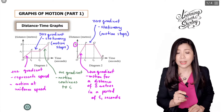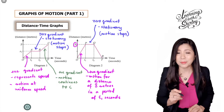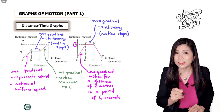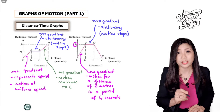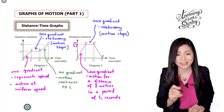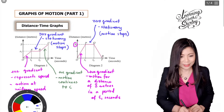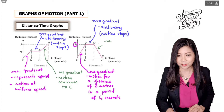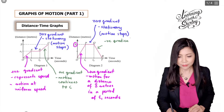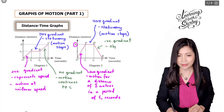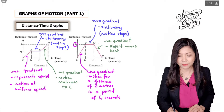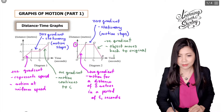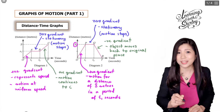Now let's look at the third line, QR. The line is going downwards, which means it's a negative gradient. A negative gradient means the object is going back to its original position, or in the opposite direction.